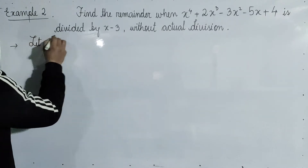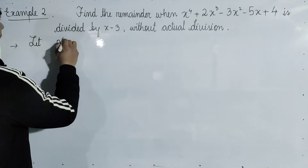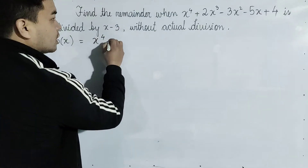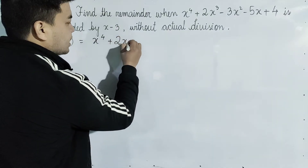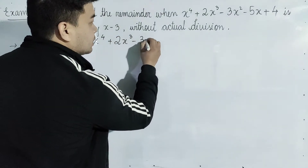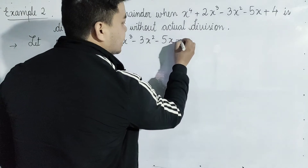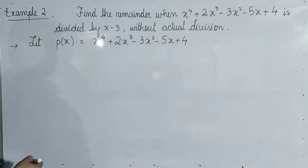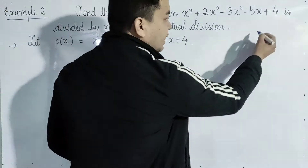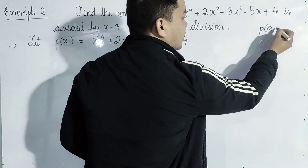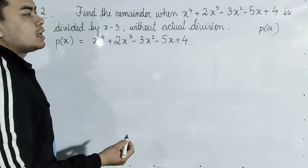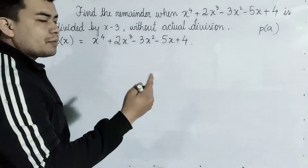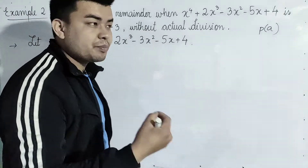Let's use it. Let P of x equal to x to the power 4 plus 2x cubed minus 3x squared minus 5x plus 4. The remainder theorem states that the remainder when P of x is divided by x minus a is equal to P of a.